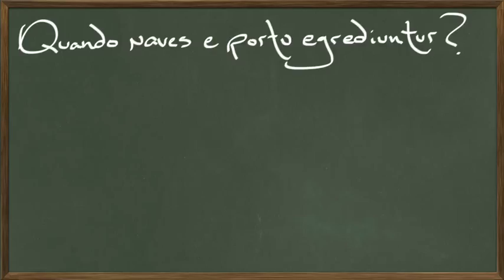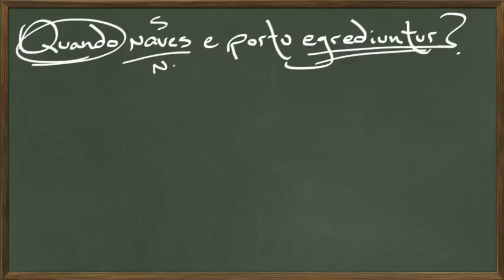So first of all, let's find out what is Mr. Orberg asking us. Quando is an adverb, it means when. Naves means ship, or ships actually, it's plural. So when do the ships, that looks like a passive verb. It's actually not.